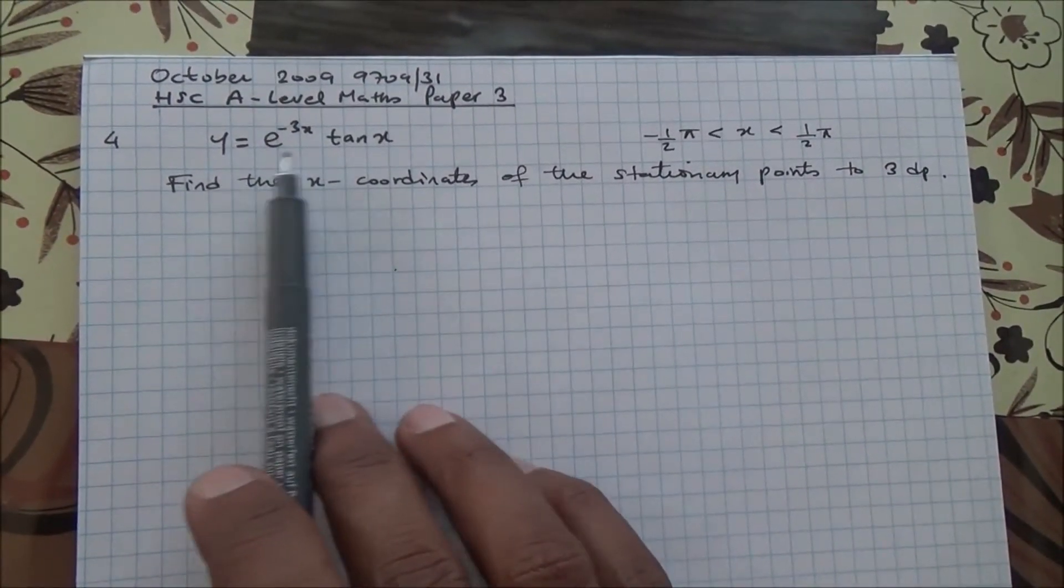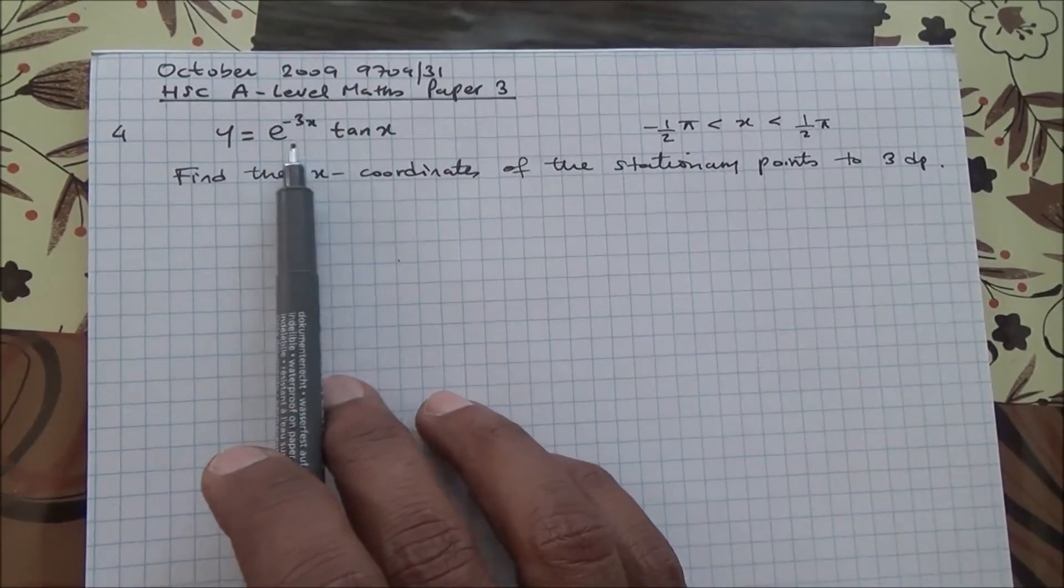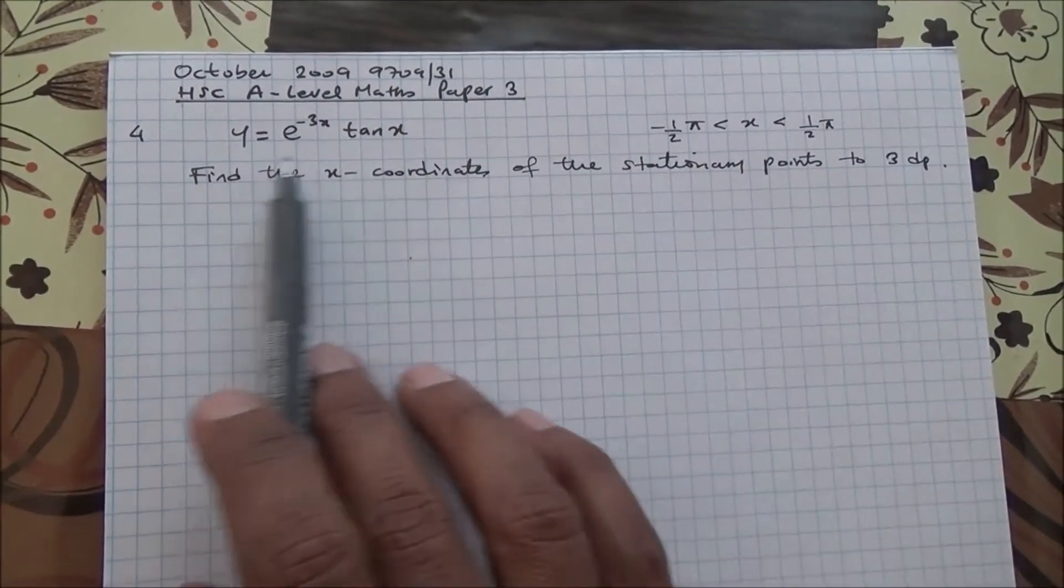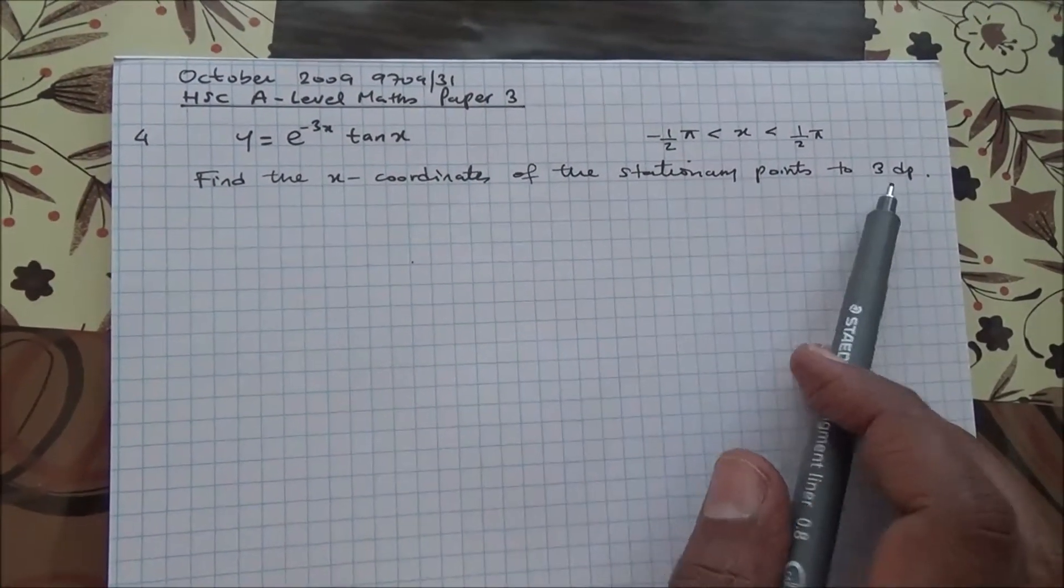Okay, so here is the curve. Now we have two variables here and they are multiplied. Therefore, we are going to be using product rule and we are going to differentiate the curve to find the coordinates of the stationary points to three decimal places.